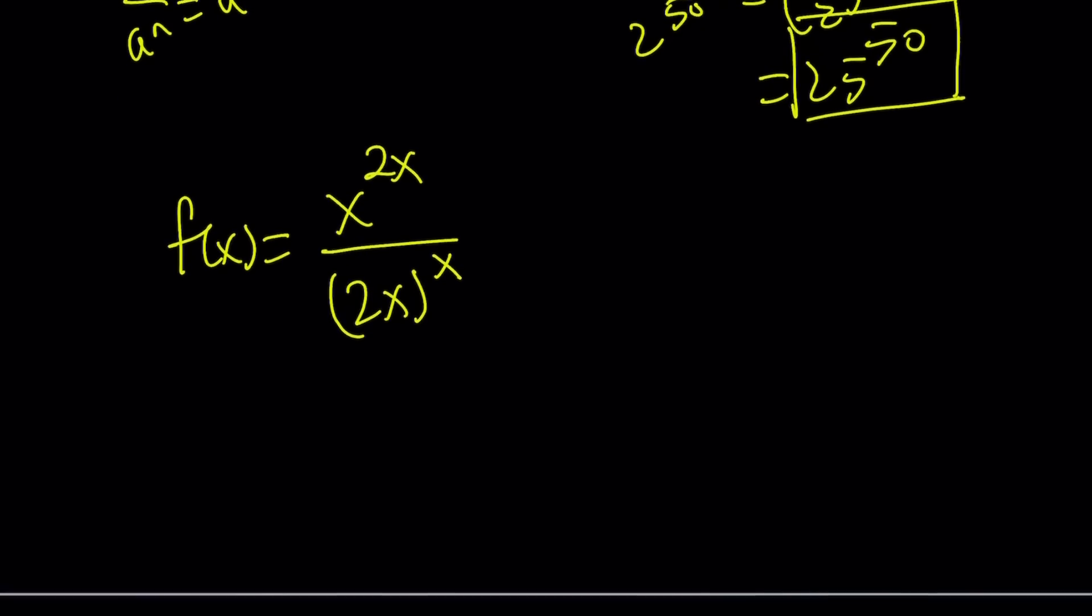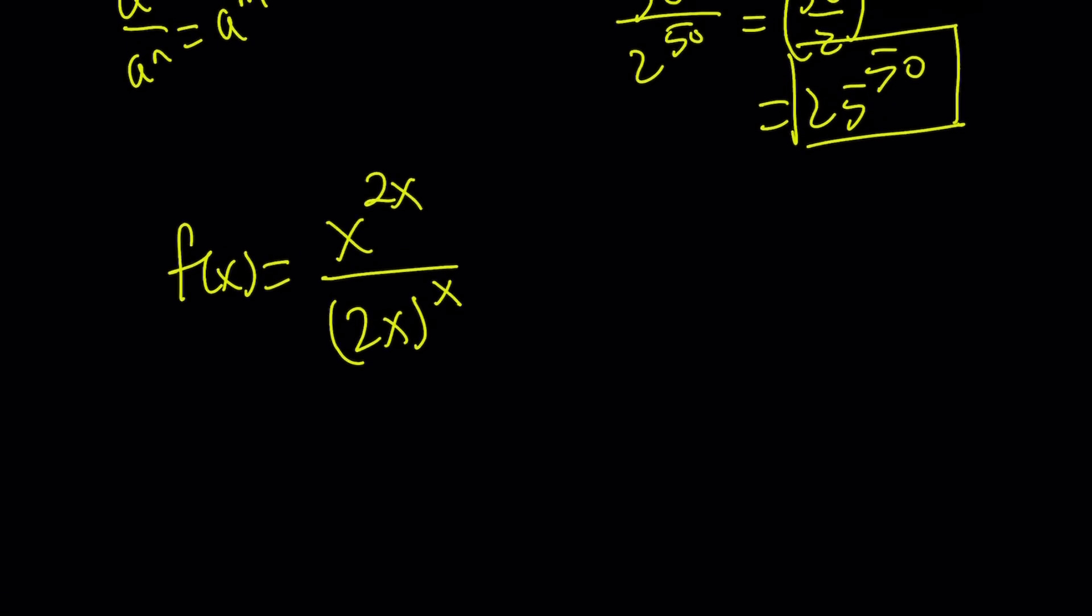Obviously, the numbers are gigantic, but here's what we can do. First of all, we can distribute the exponent at the bottom. So let's write it as x to the 2x divided by 2 to the x times x to the power x. Awesome. Now, what can I do here? There's a couple of things you can do here. First of all, you can go with x to the 2x and 2 to the x because they have the same exponent. Sort of.